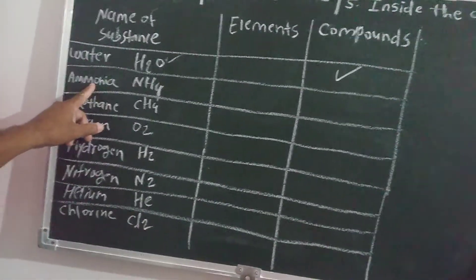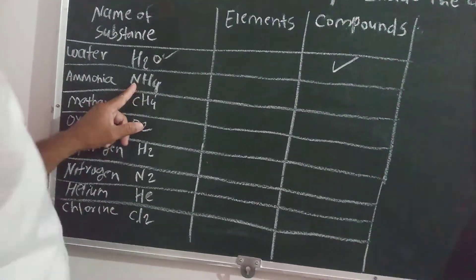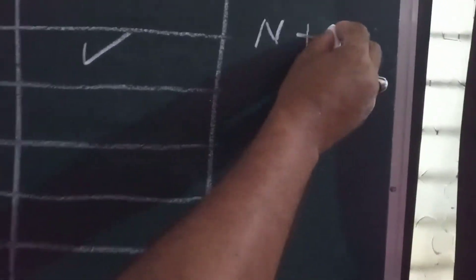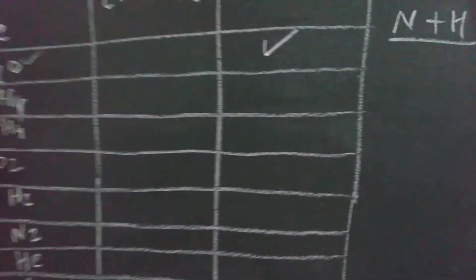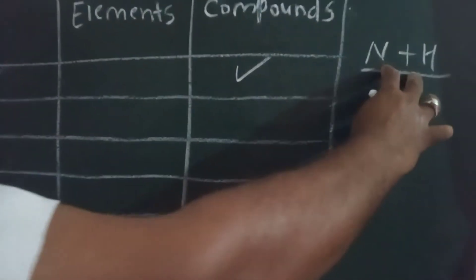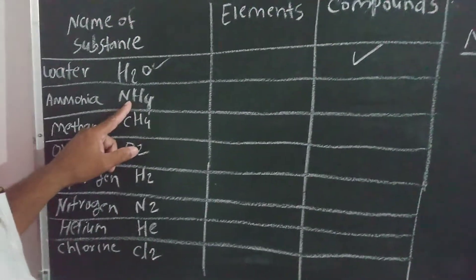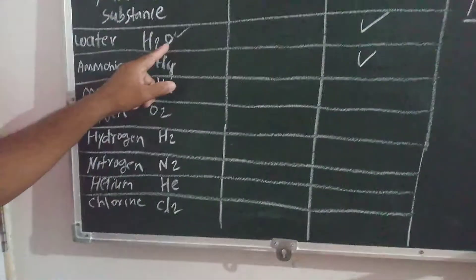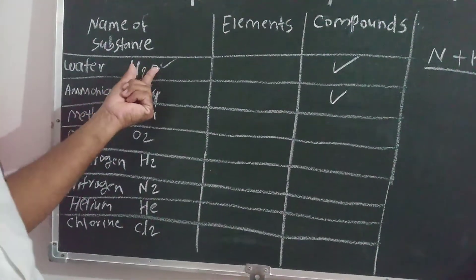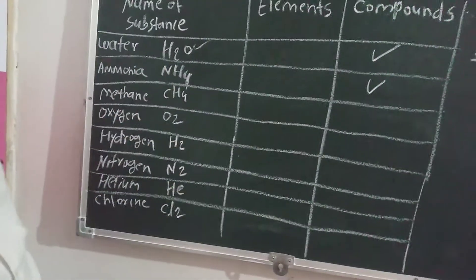The next example is ammonia. The formula of ammonia is NH4. Here also two molecules participate and are combined — nitrogen plus hydrogen. One atom of nitrogen and four atoms of hydrogen. Here also two types of molecules are combined to form ammonia, therefore this substance is also a compound. Water is also a compound because two types of molecules — here also nitrogen and hydrogen — are combined.